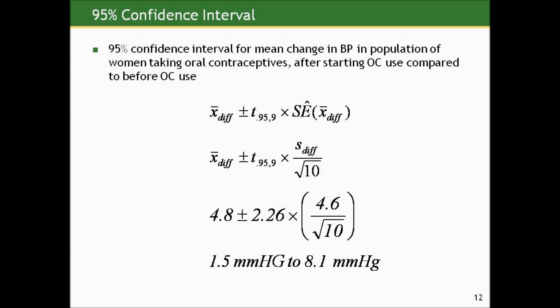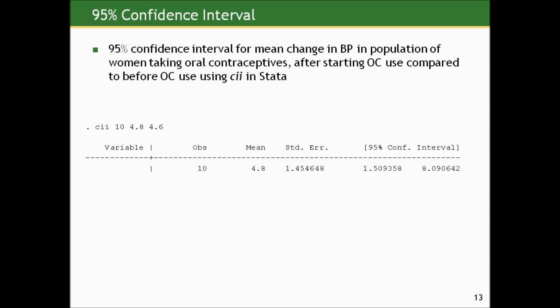If we wanted to do this in Stata, we could use the CII command. We give our sample size of 10, our sample mean of 4.8, and our sample standard deviation of 4.6, and we get the same result.